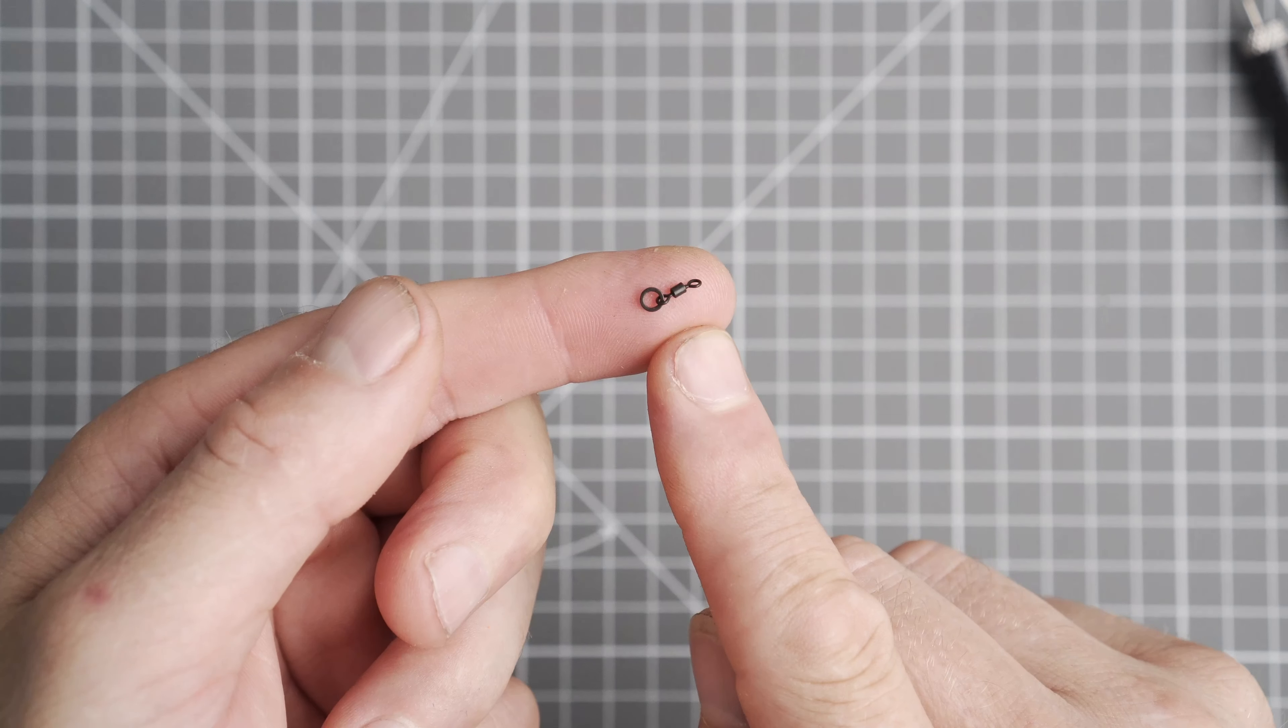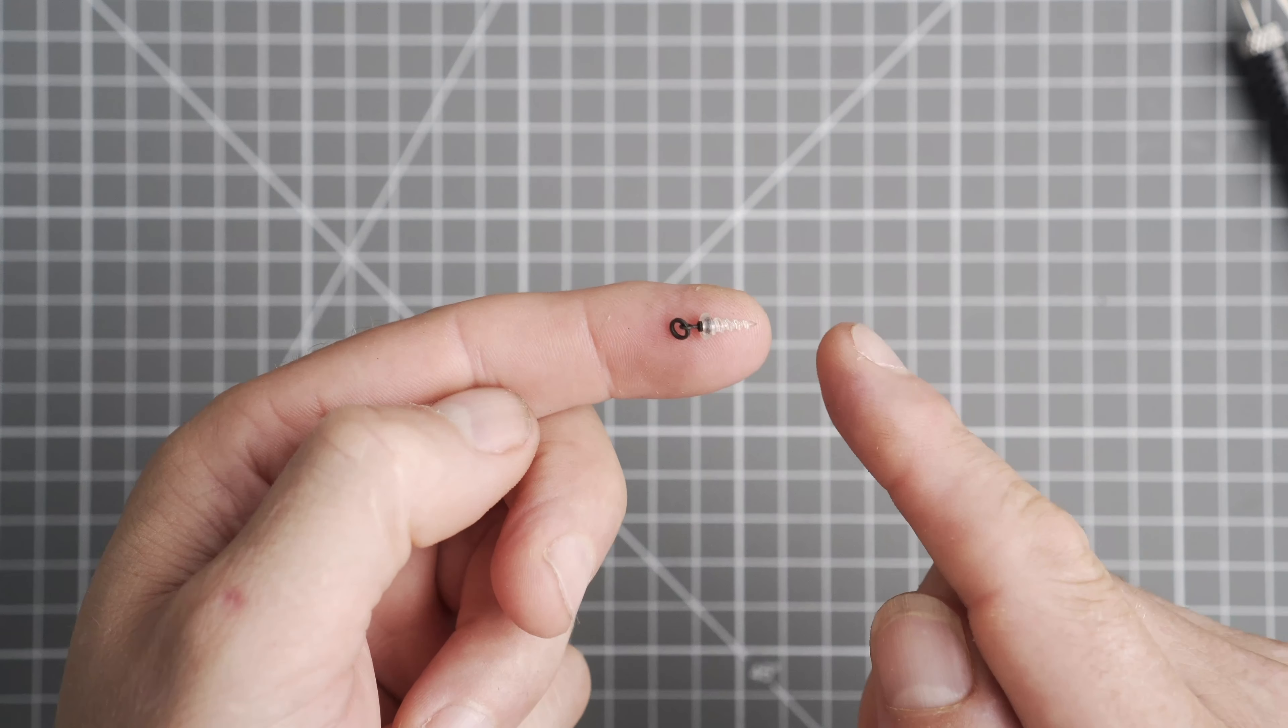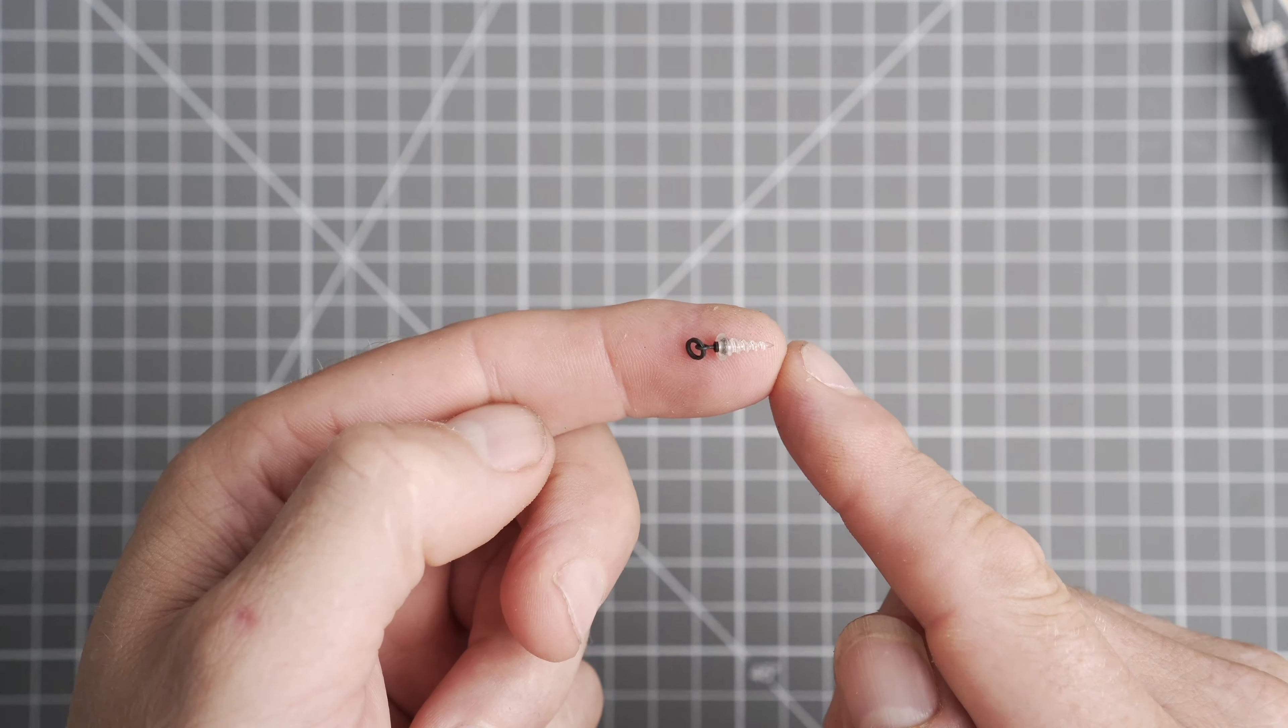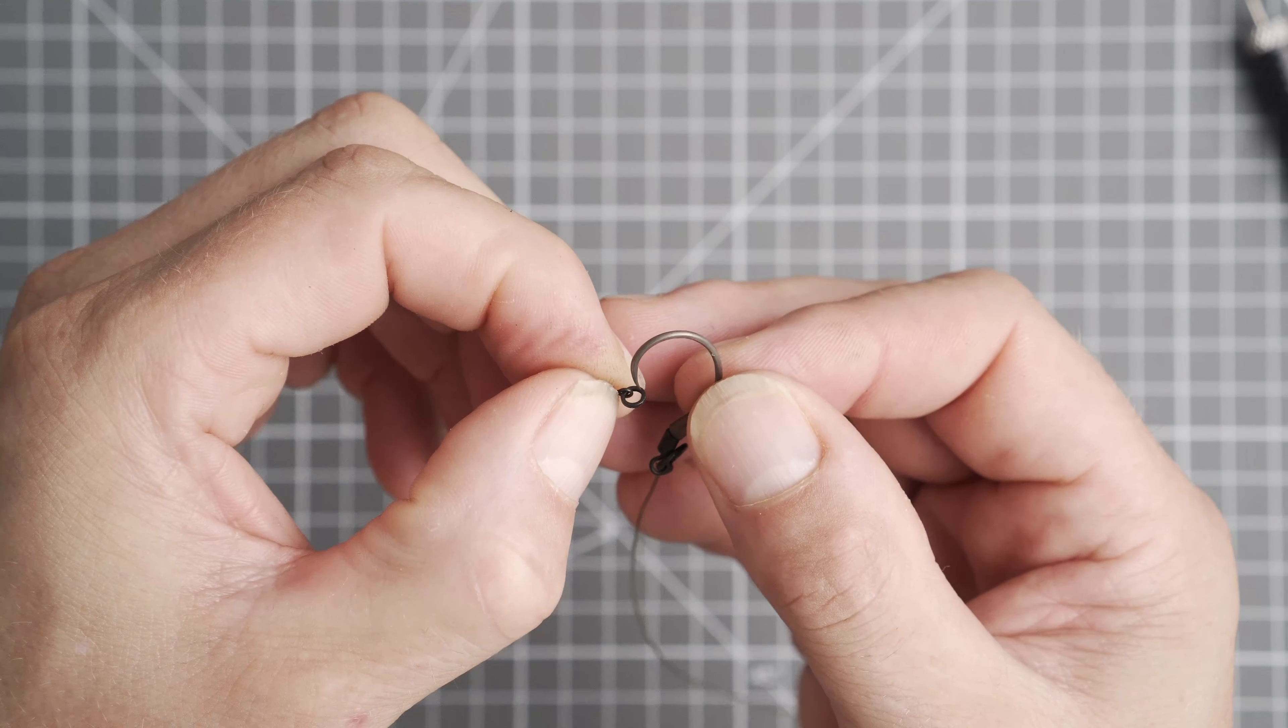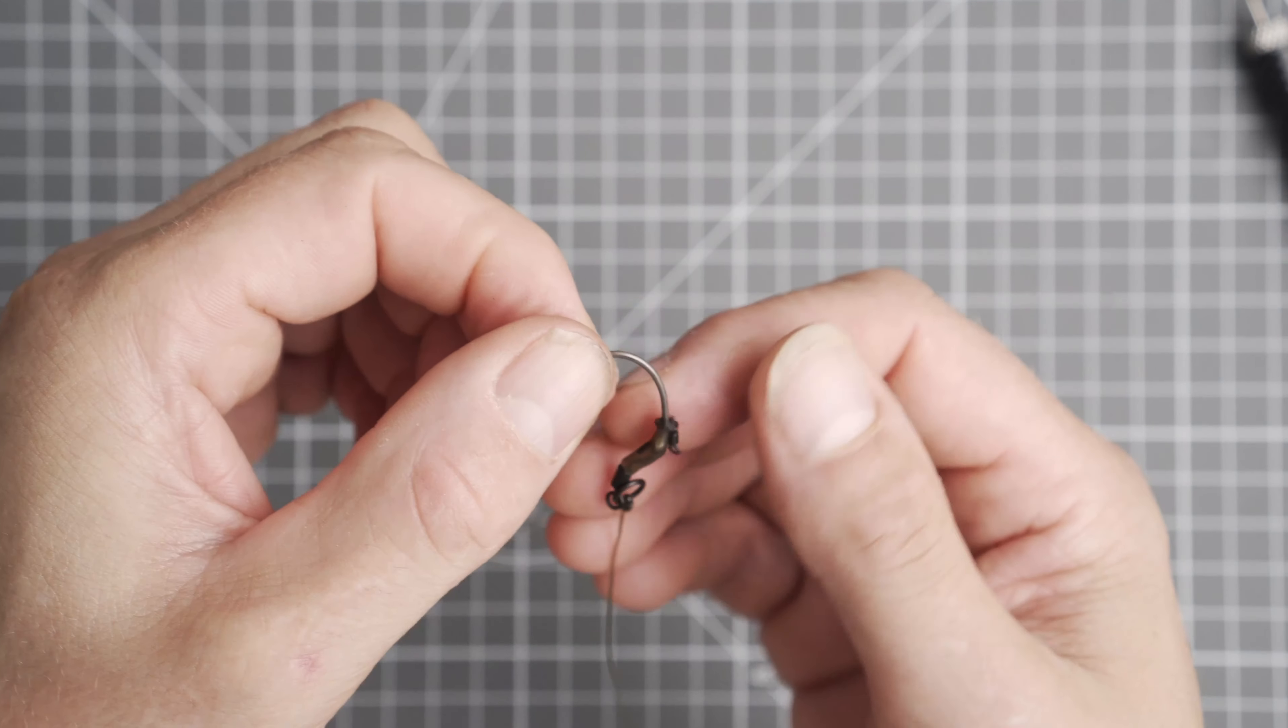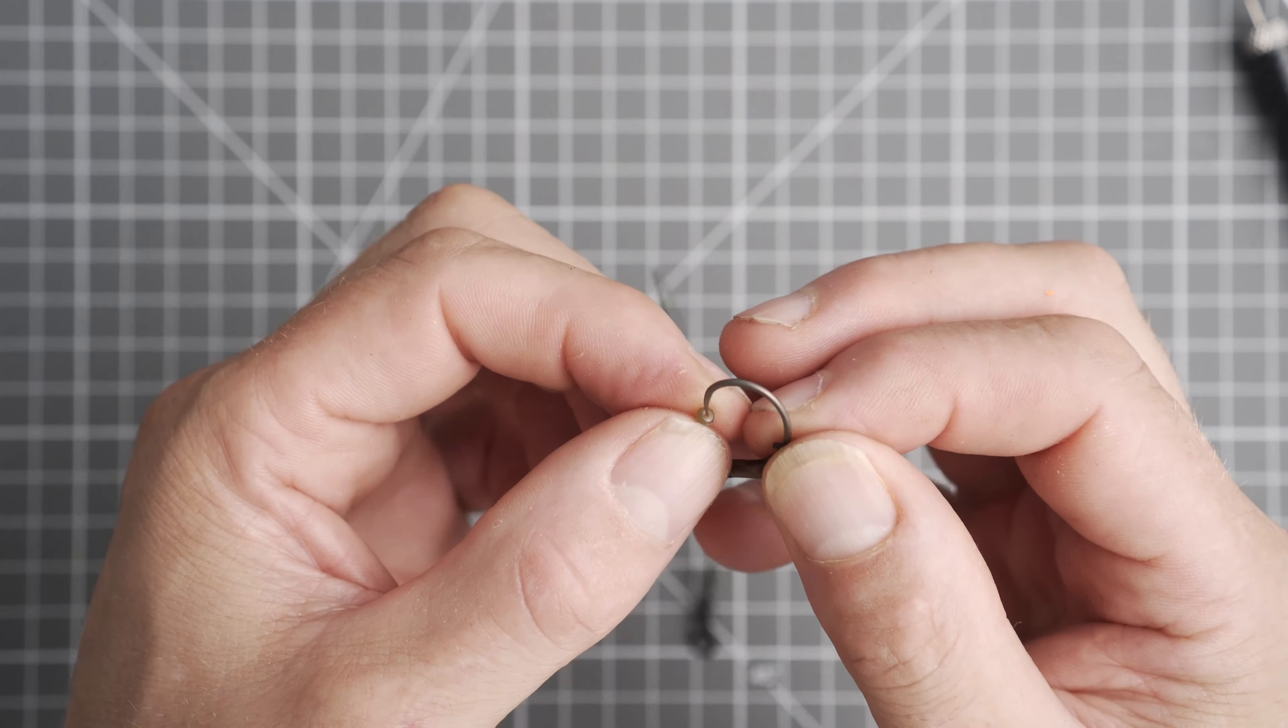Now if you want to use a micro ring swivel you can also use a micro bait screw and also a hook bead. Thread your micro ring swivel onto the hook, alternatively the bait screw, and then followed by the hook bead.